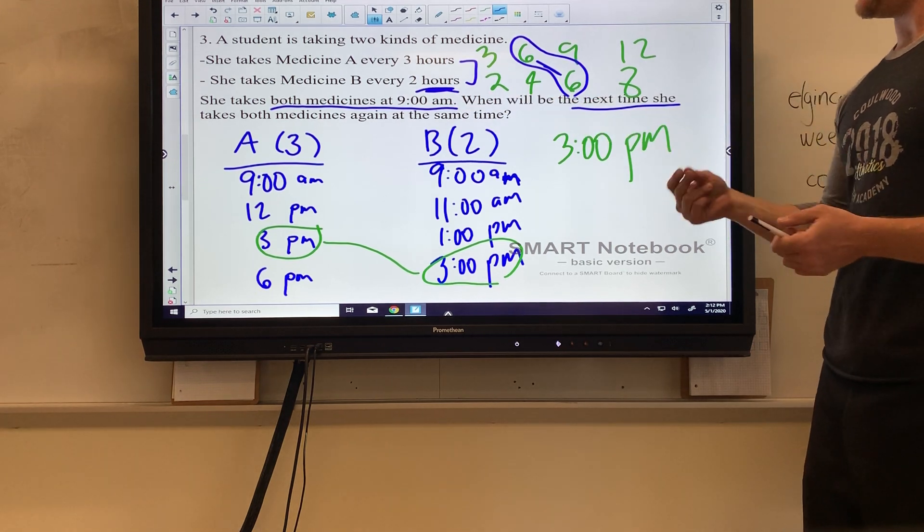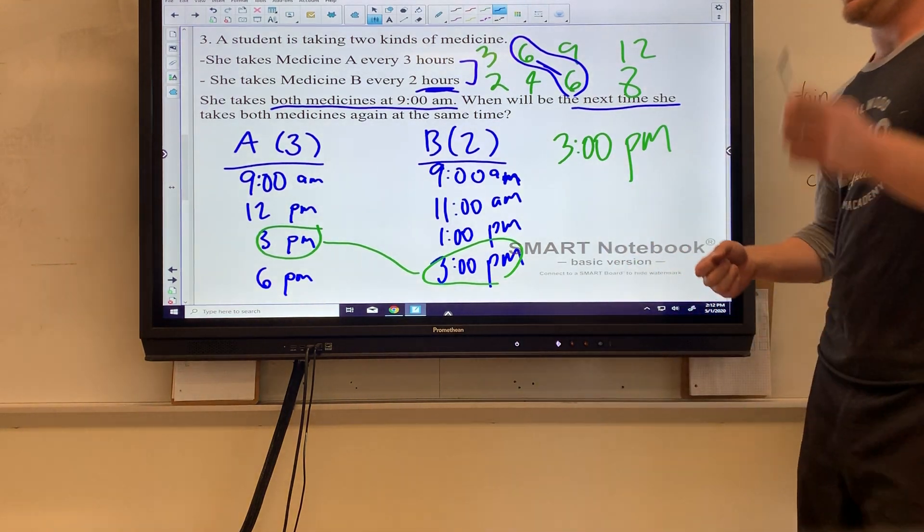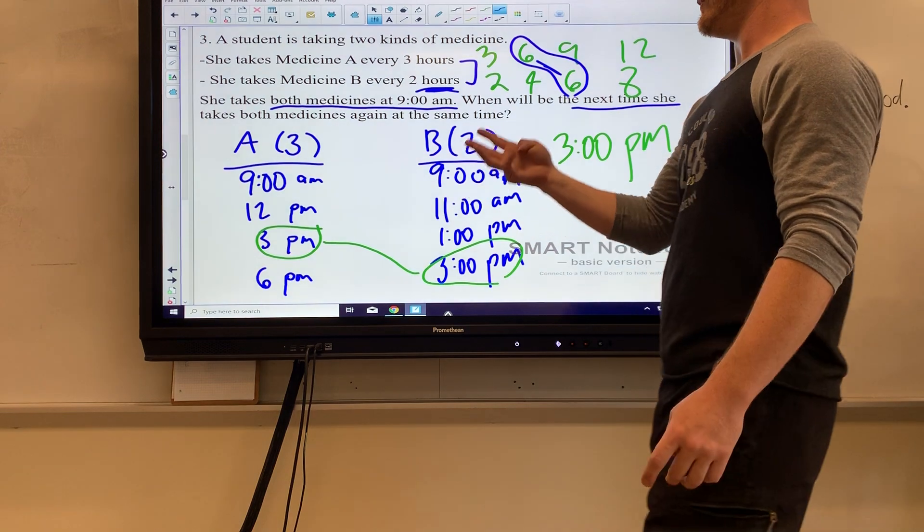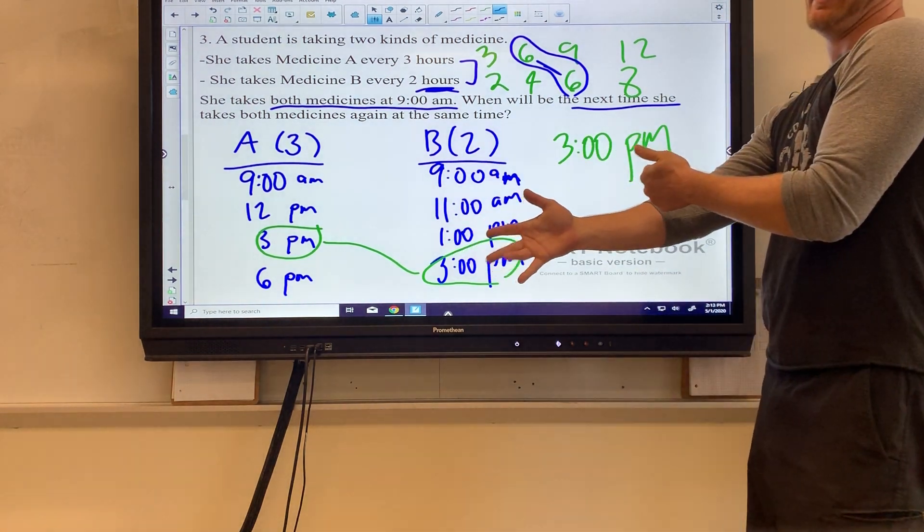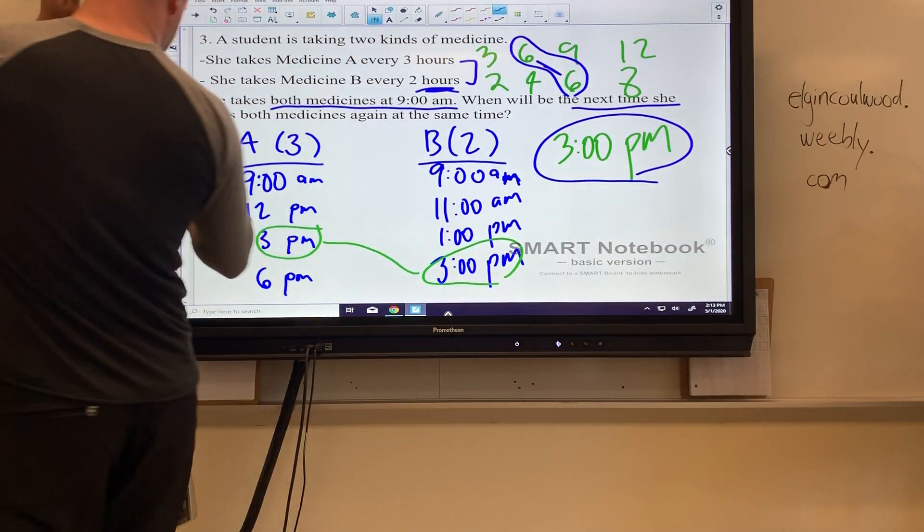What this means is every six hours she's taking both medicines. If you're good with time and you know it's every six hours, you can just do six hours later than 9 a.m. That'd be 9 a.m., 10 a.m., 11 a.m., 12 p.m., 1 p.m., 2 p.m., 3 p.m. That might be a quicker way to do it. Either way it works—find the one that works best for you.